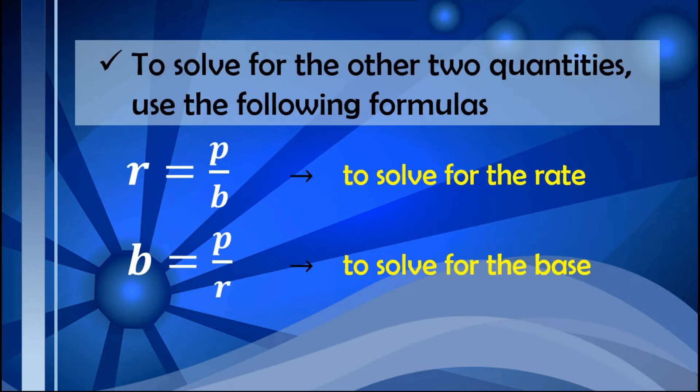To solve for the other two quantities, we just simply manipulate and write the formula into the following forms. So, to find the rate, we have percentage over the base. And to solve for the base, we have percentage over the rate.